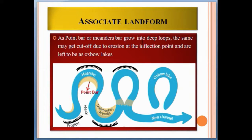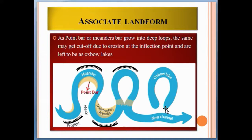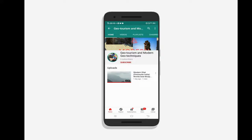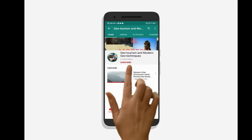As point bars and meander bars grow into deep loops, the neck may be cut off due to erosion at the inflection point and left as an oxbow lake. As you can see, this is the meander, this is the point bar, and this is the oxbow lake. The oxbow lake forms when the neck of a meander is cut off by erosion.